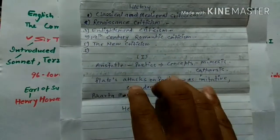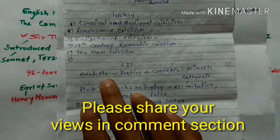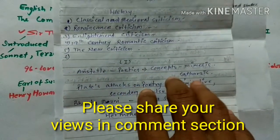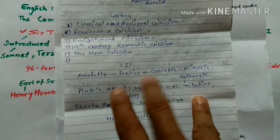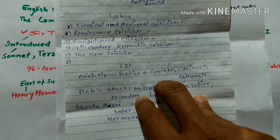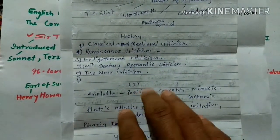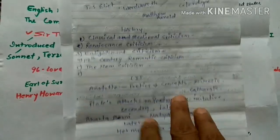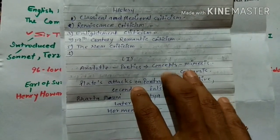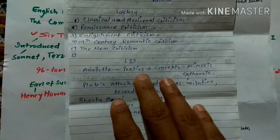The first is classical and medieval criticism. Here we have Aristotle's poetic concepts — he gave us the concepts of mimesis and catharsis. In a future video we will discuss his Poetics in detail: what he said about mimesis, what catharsis means as purification, what he talked about tragedy, its parts, how it should be written and composed.